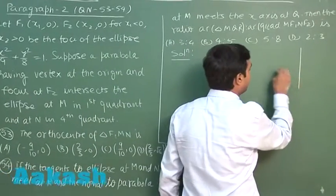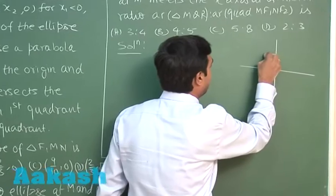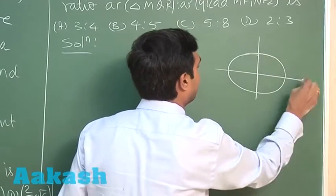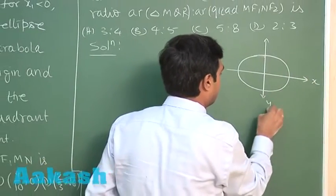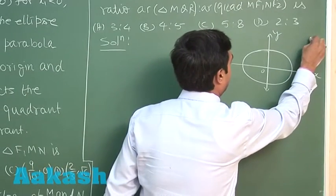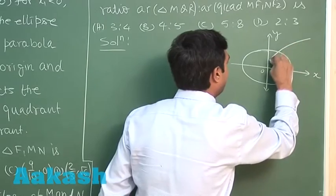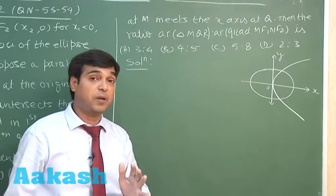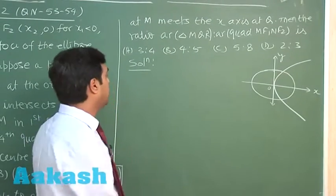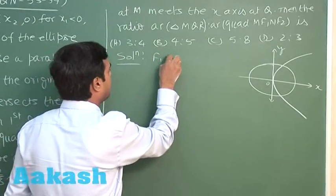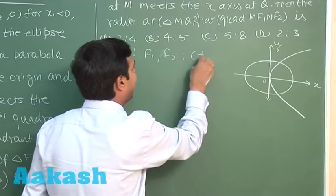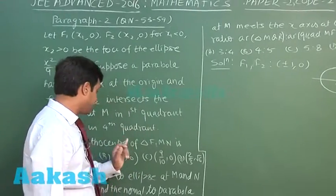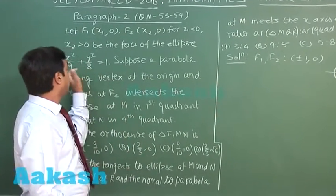One ellipse is given as x square by 9 plus y square by 8 equals 1. One parabola is given which we have to trace based on the fact that the foci of the parabola is same as F2. F1 and F2 can be written as plus minus 1 comma 0, because plus minus c comma 0, that is plus minus 9 minus 8 from the equation of ellipse.